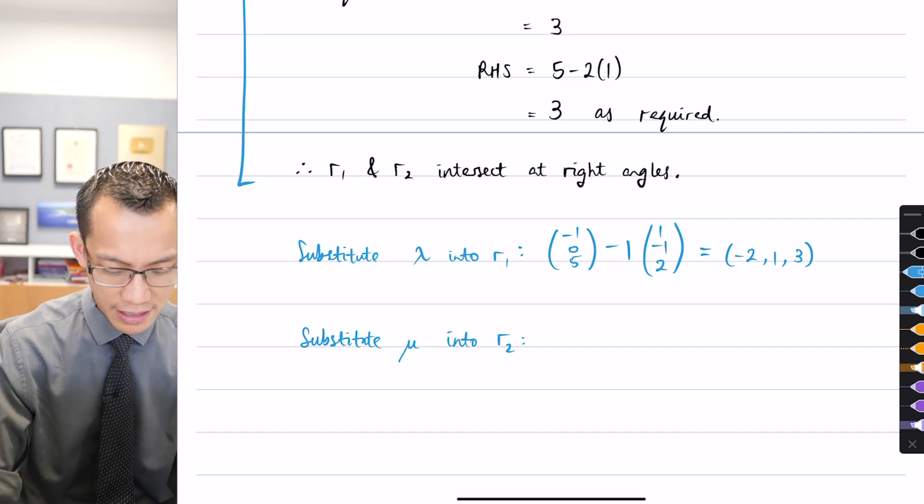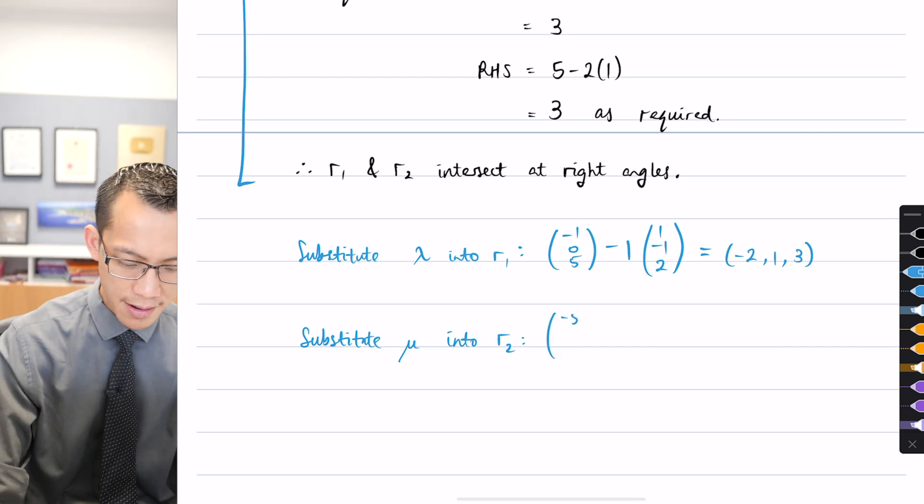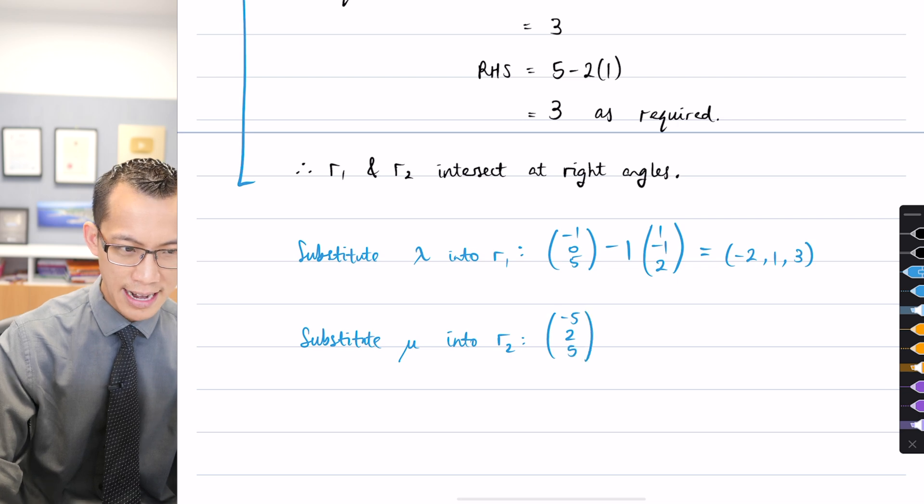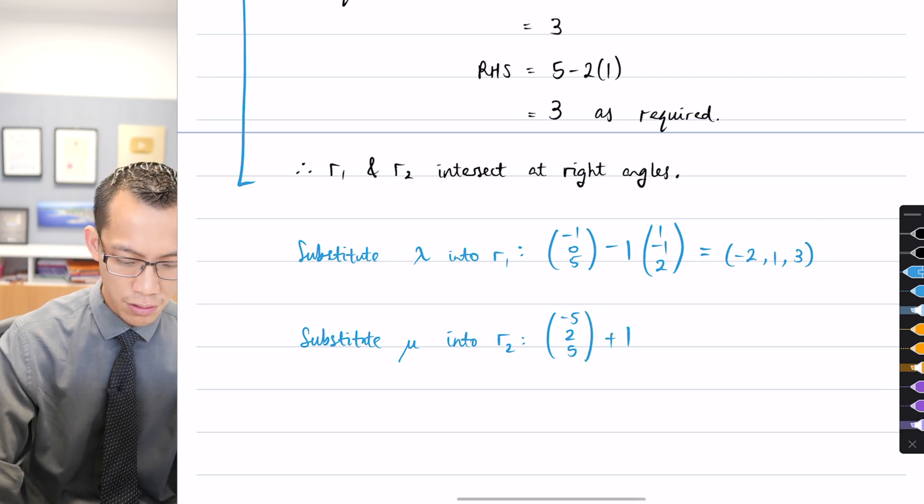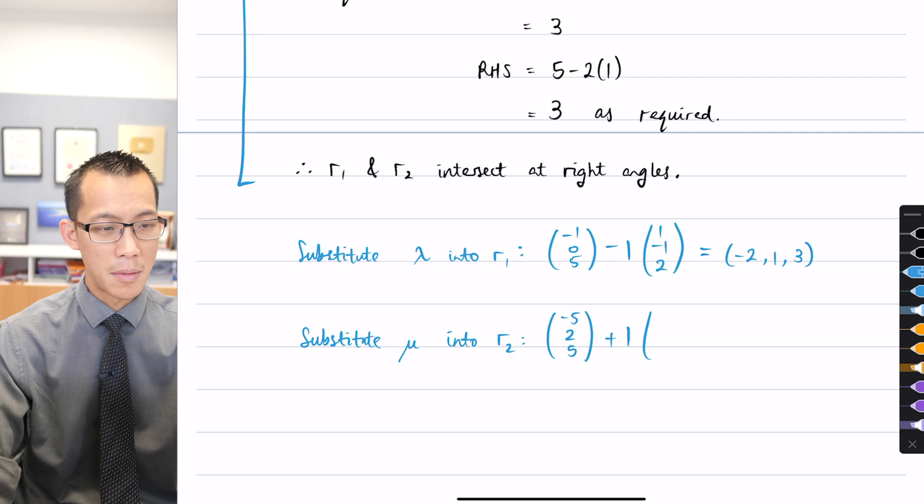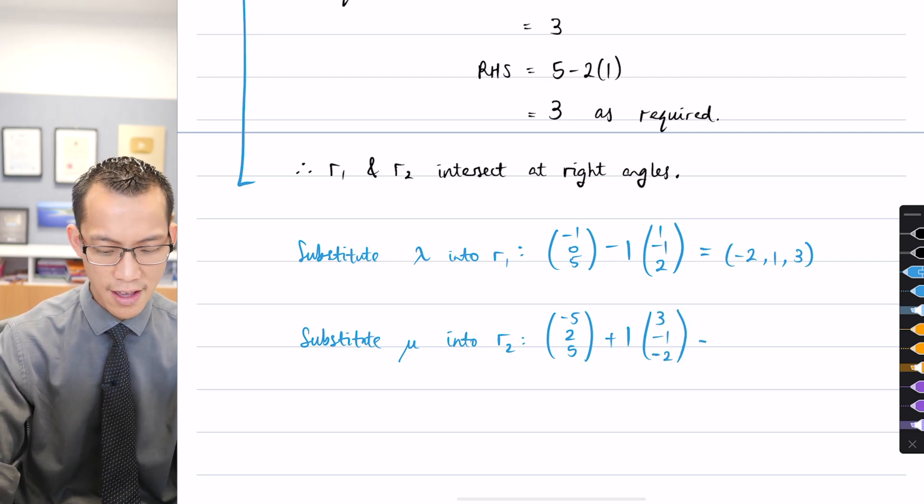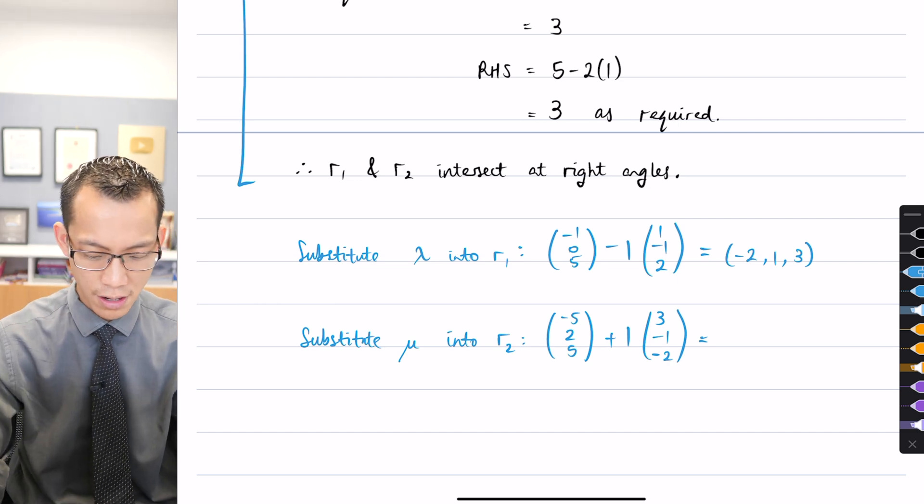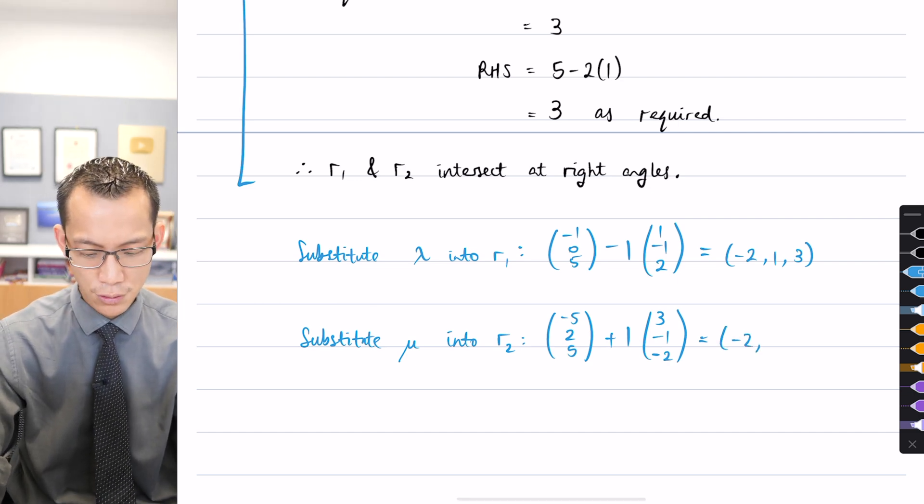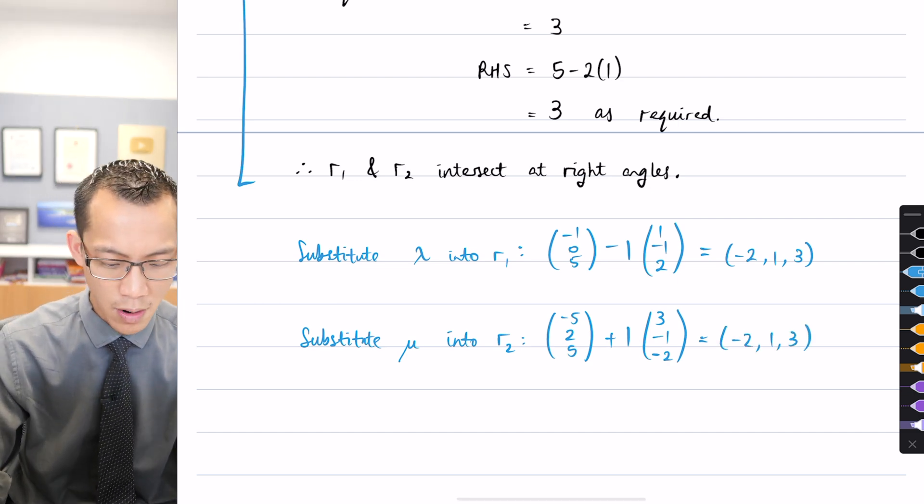And then you would have to substitute mu into r2 because it's not enough just to find it for one line. So again you've got to go back. It's got a different position vector and it has a different, here comes mu, it has a different direction vector, 3, negative 1, negative 2. And again you've got to go across. So it looks like we do get the negative 2, 1, 3 as required.